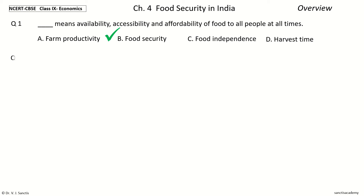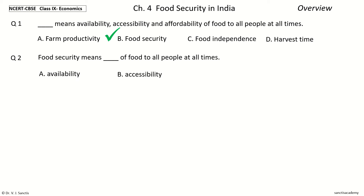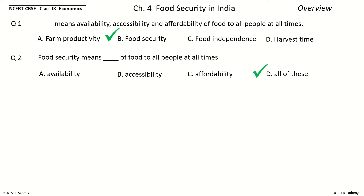Question 2: Food Security means Dash of food to all people at all times. The options are Availability, Accessibility, Affordability, All of these. Your time to choose. And the answer is All of these.